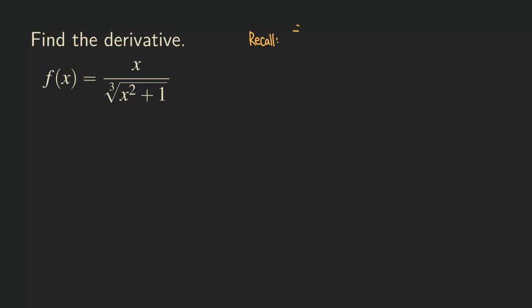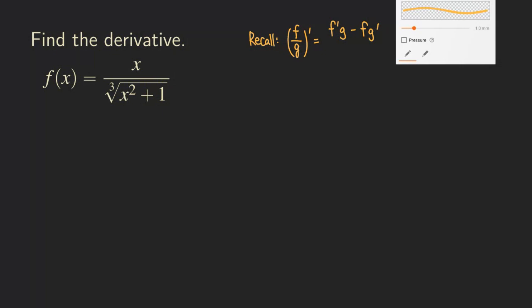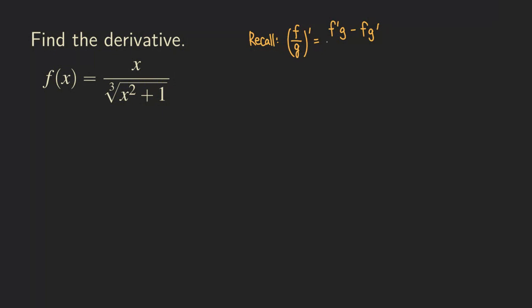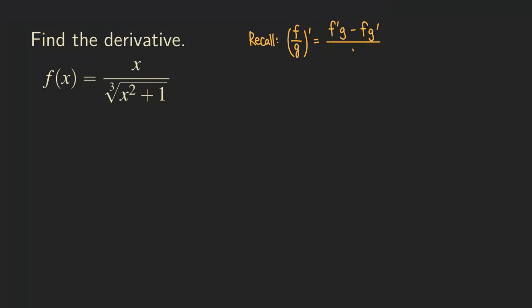For the quotient rule, if you have a function over another function, when you take the derivative, you are going to get f prime g minus f g prime, all over g squared.